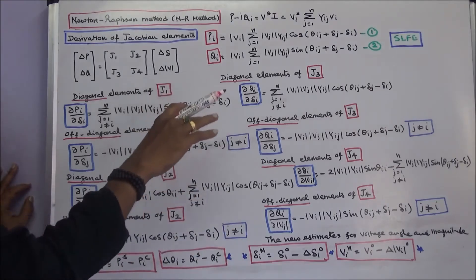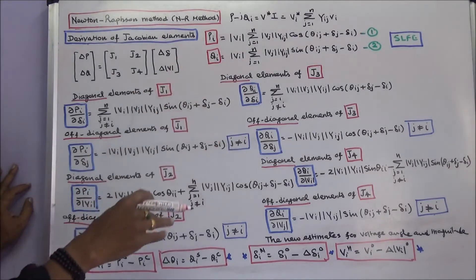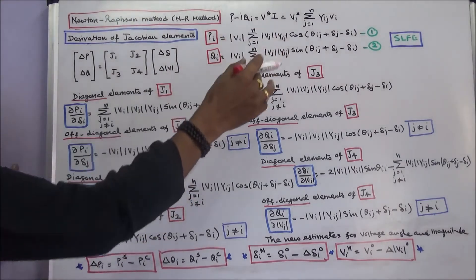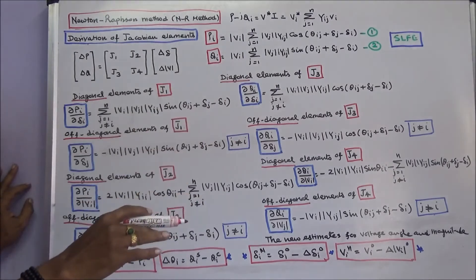In this class we derive the elements of the Jacobian matrix. Equation 1 and 2 are called the static load flow equations.